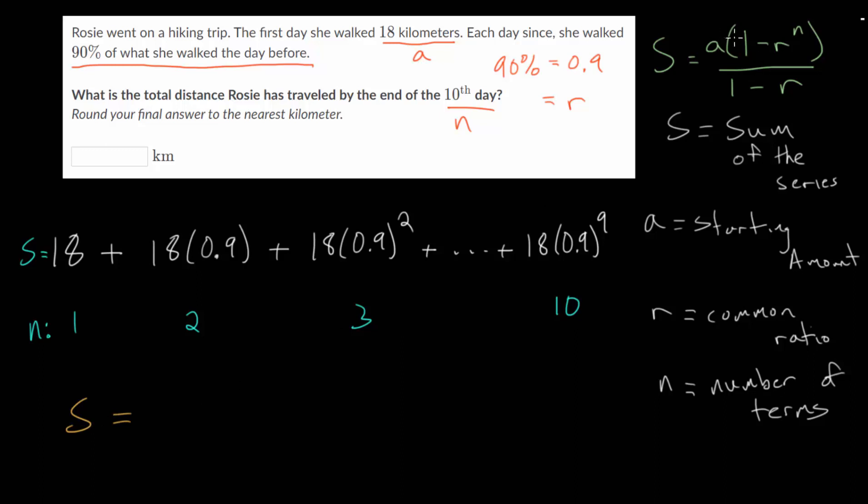Since we know what a, r, and n are. So a is 18. So we're just plugging that in here. And then we have 1 minus our common ratio, which is 0.9, all raised to the nth power. And n is the number of terms. That's 10 in this case. And then all divided by 1 minus that common ratio, which, again, is 0.9.